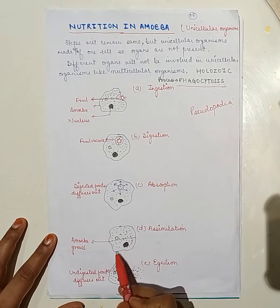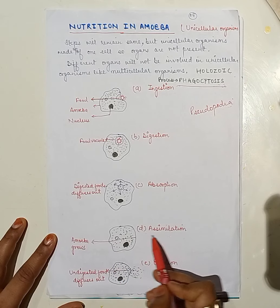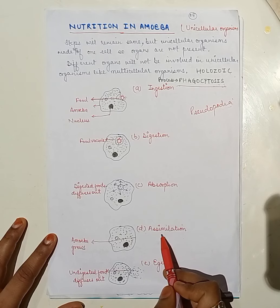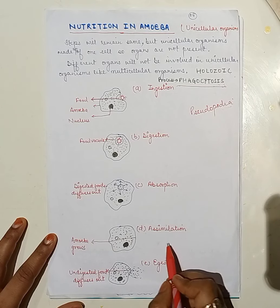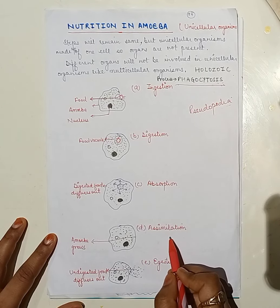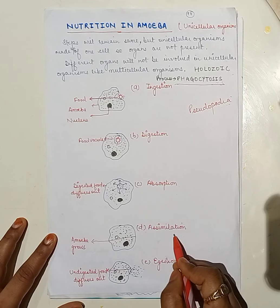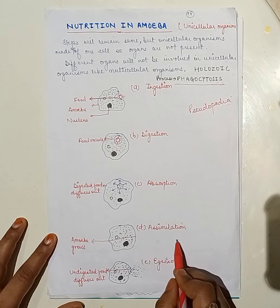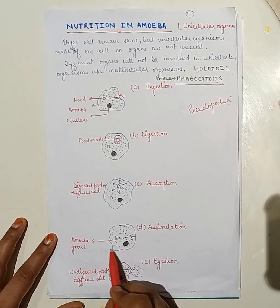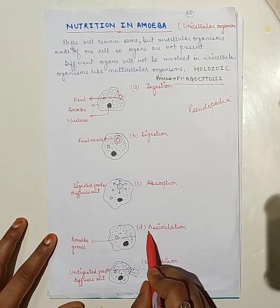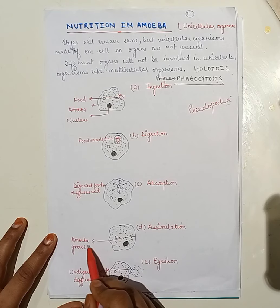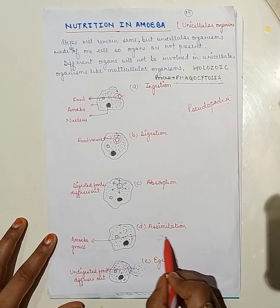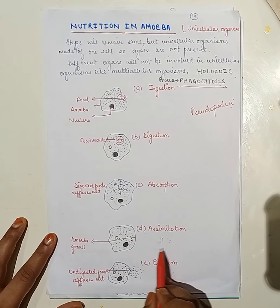The fourth step is assimilation. In the case of multicellular organisms, nutrition is used for cells and tissue repair. In the case of amoeba, assimilation takes place by growing — the amoeba grows in size and forms two daughter cells.